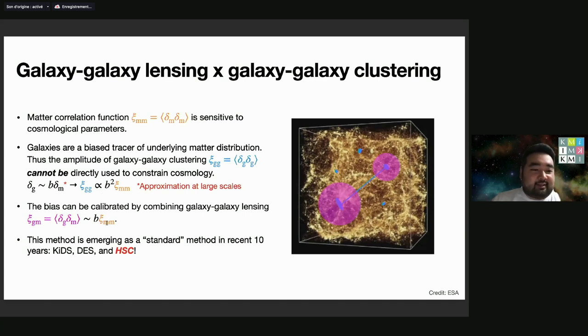Using these two observables, we can calibrate the bias and extract the cosmological information. This method is actually emerging as a standard method in recent 10 years.